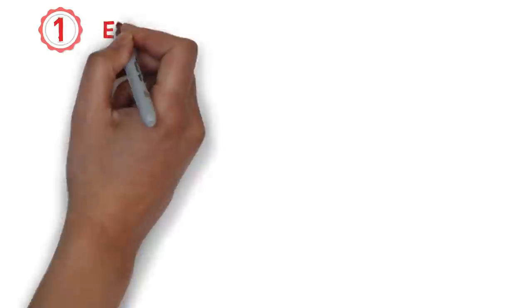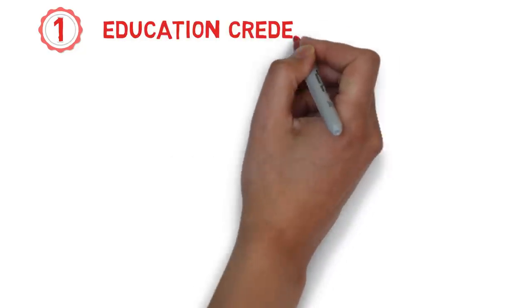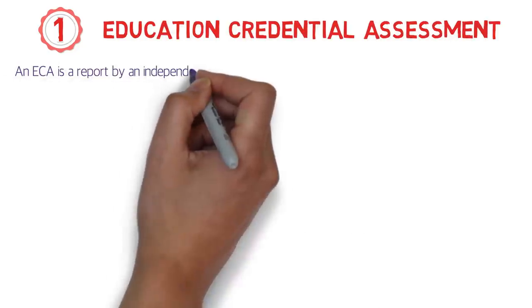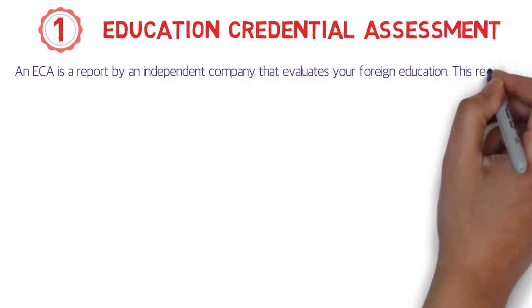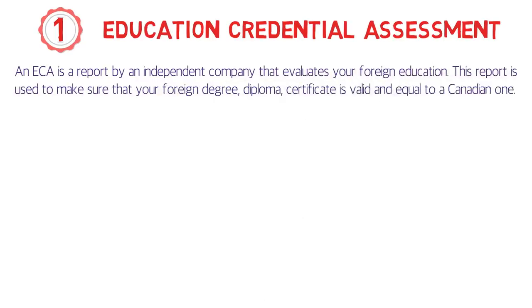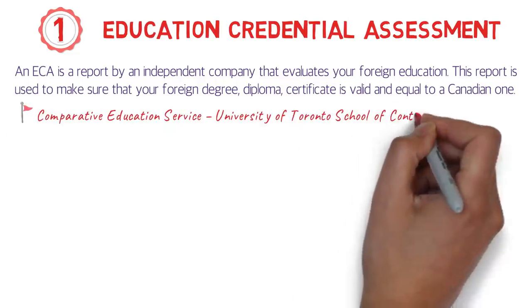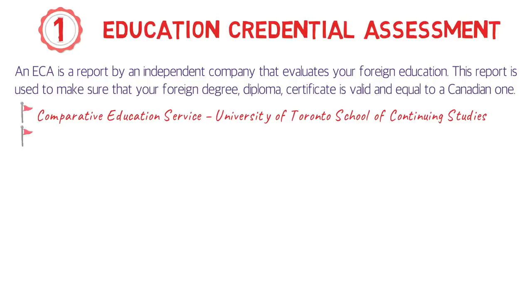Step one is Education Credential Assessment, or ECA. An ECA is a report by an independent company that evaluates your foreign education. This report is used to make sure that your foreign degree, diploma, or certificate is valid and equal to a Canadian one. The ECA is not done by the Canadian government — it's done by a few independent organizations.